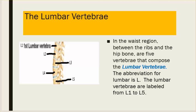The lumbar vertebrae are located in the waist region between the ribs and the hip bone. There are five vertebrae that compose the lumbar region. The abbreviation for lumbar is L, and they are labeled from L1 to L5.